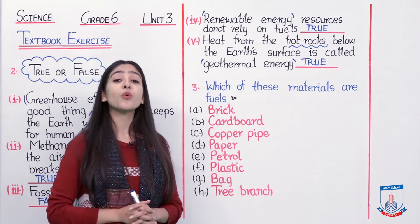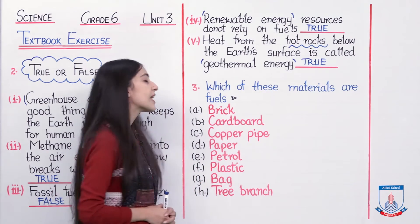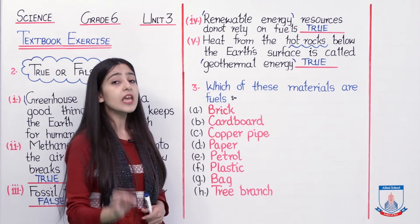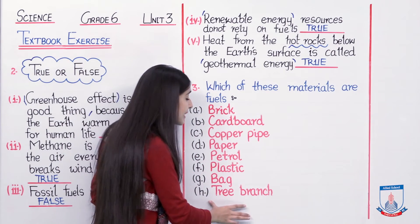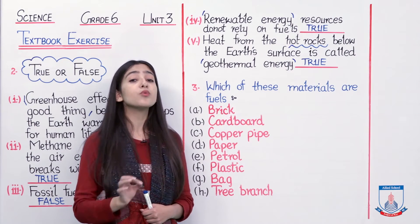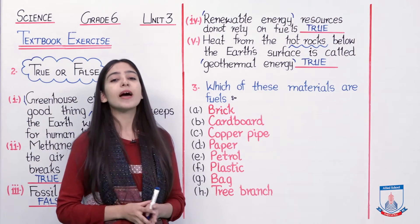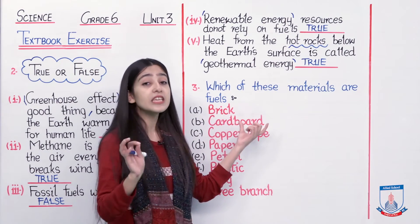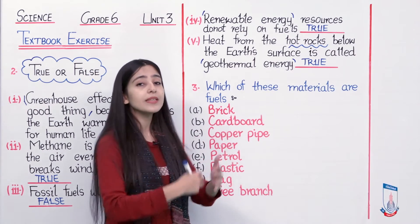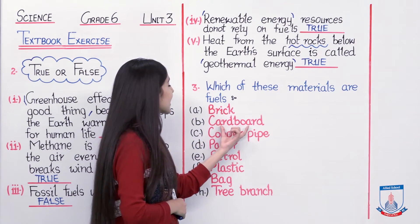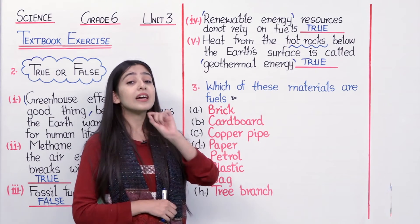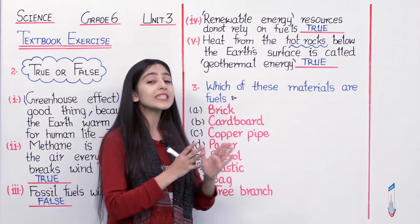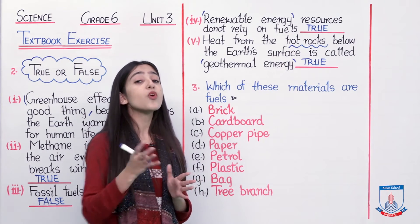Question number 3 asks: 'Which of these materials are fuels?' We have a list of materials and we have to identify which material can be used as a fuel — that is, as an energy source. Option A is brick, which is used in construction. Option B is cardboard, which is made from a tree — a plant source. Since plants are organic material, we give this the name biomass. Cardboard can be used as an energy source.